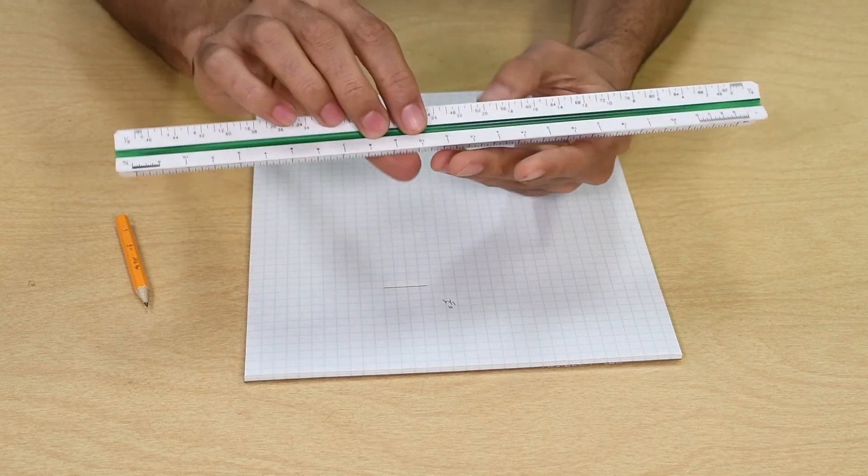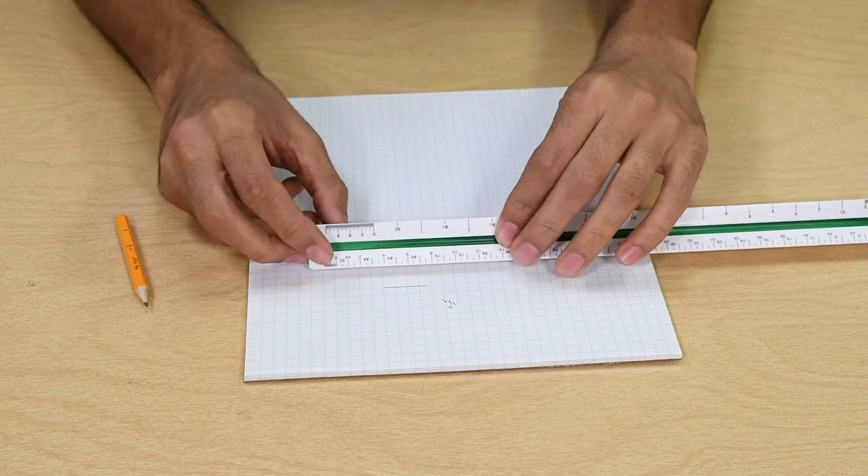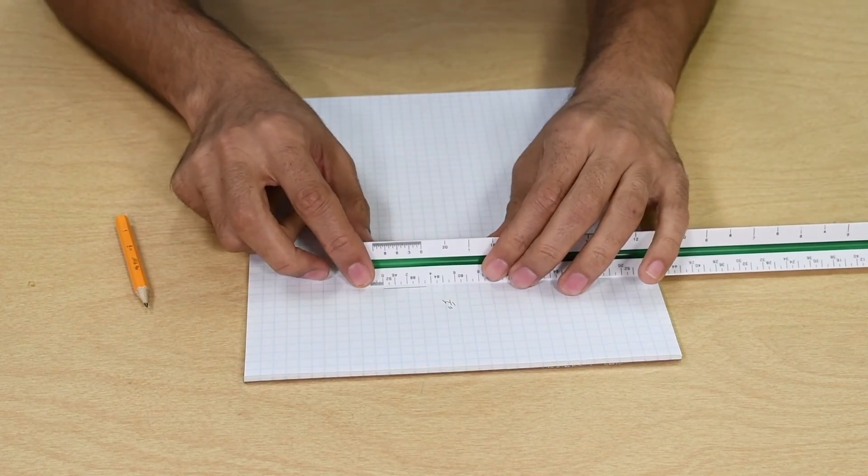Let's say we would like to measure a line in quarter inch scale. That means 1 quarter inch on the paper equals to 12 inches or 1 foot.